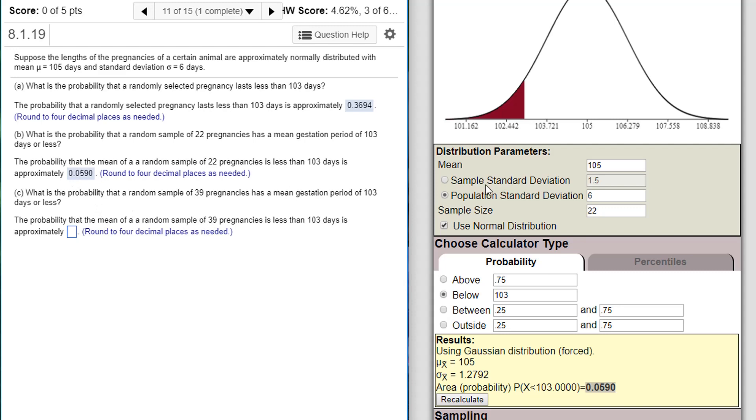What's the probability that a random sample of 39 pregnancies has a mean gestation of 103 days or less? We'll just change this to 39, hit enter.